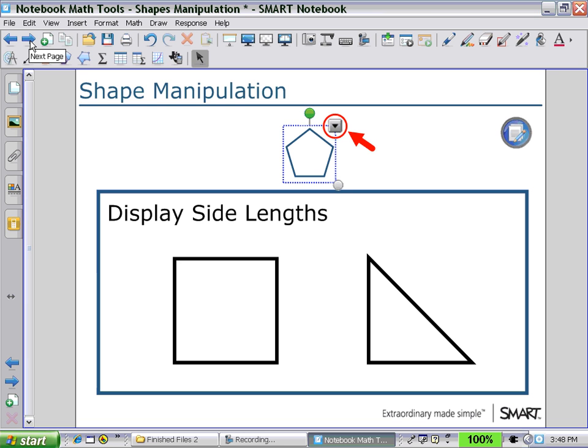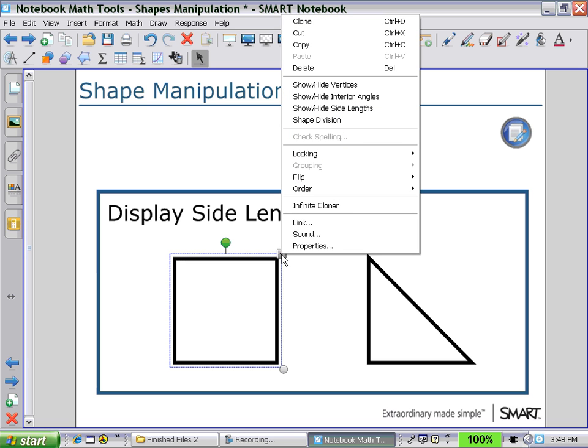Next we can display side lengths. Again, selecting a shape and using the arrow pull down menu. This time, select show and hide side lengths.